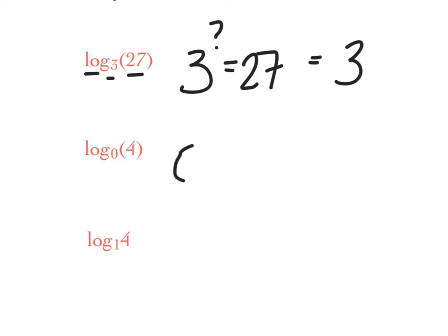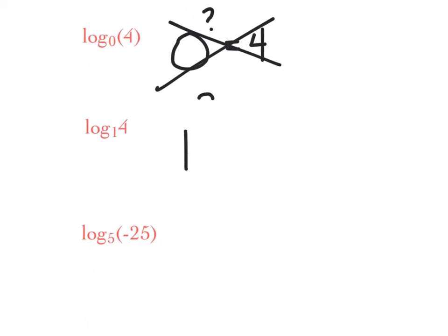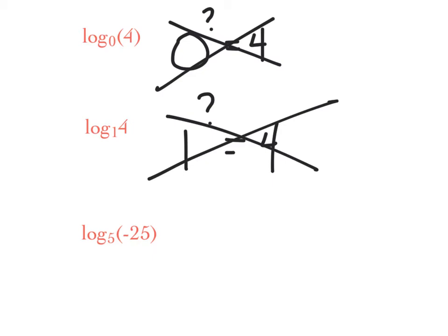Log base 0 of 4 — so what power of 0 is 4? 0 to the what power is 4? Well, that can't be done, so we're just going to cross that off. Log base 1 of 4 — so 1 to what power is 4? Again, 1 squared, 1 cubed, 1 to the 4th, 1 to the 5th, 1 to the trillionth — that's all just 1, so that can't be done. 5 to what power is negative 25? Well, I'm thinking squared, but 5 squared is positive 25, so that can't be done.